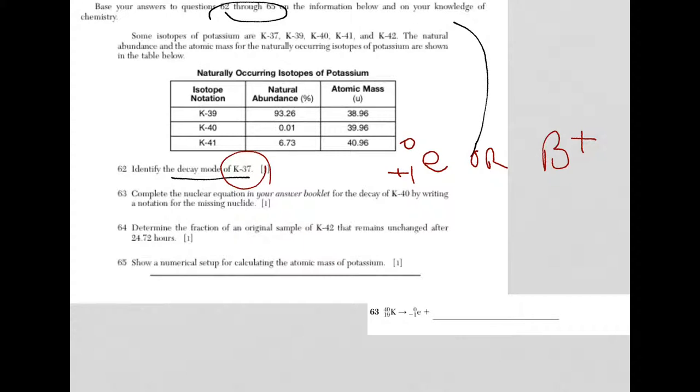When you balance nuclear equations, the numbers on the top have to be equal and then the numbers on the bottom. In other words, 40 is equal to 0 plus what number? Obviously, it's 40. So that's my mass number. On the bottom, 19 is equal to minus 1 plus what number? Now, be careful. This is beta minus decay. So you have to realize that the bottom number is 20. 20 minus 1 is equal to 19. It is not 18. That's where kids make a mistake.